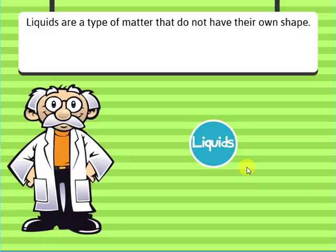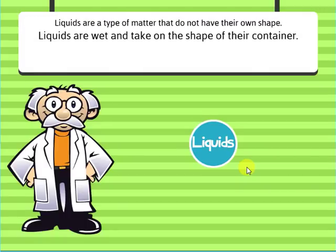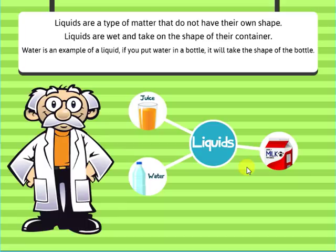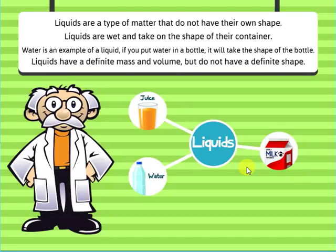Liquids are a type of matter that do not have their own shape. Liquids are wet and take on the shape of their container. Water is an example of a liquid. If you put water in a bottle, it will take the shape of the bottle. Liquids have a definite mass and volume, but do not have a definite shape.